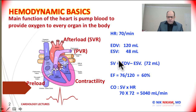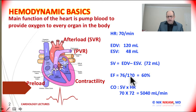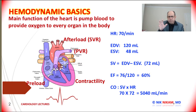From these numbers we can calculate another important number known as the ejection fraction, which is one of the most important parameters of how well the heart is functioning. The ejection fraction in our example is stroke volume divided by end diastolic volume, which is 72 divided by 120 — that is 60% of the blood. In other words, the ventricle is pumping 60% of the blood it has at the beginning of contraction. This is one of the most important indicators of cardiac function.